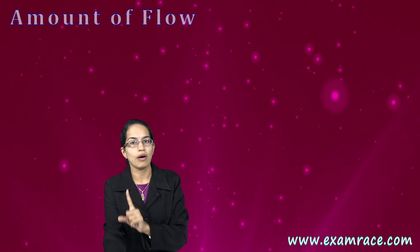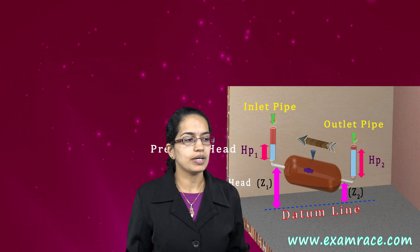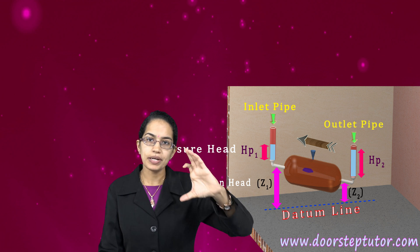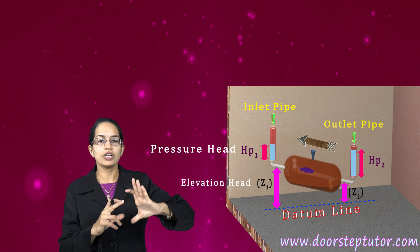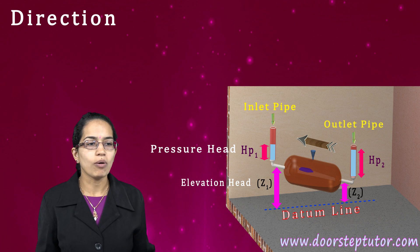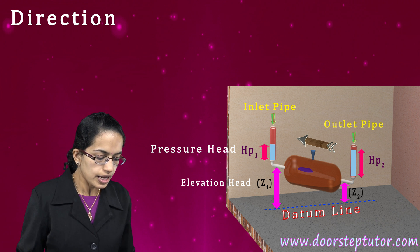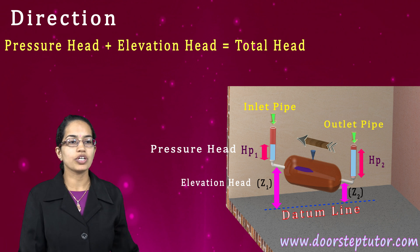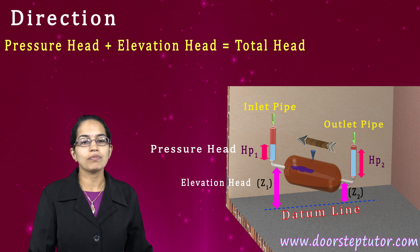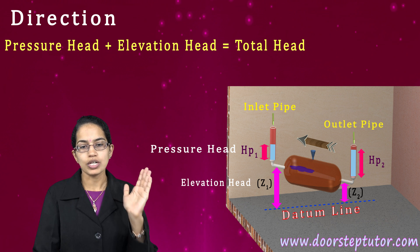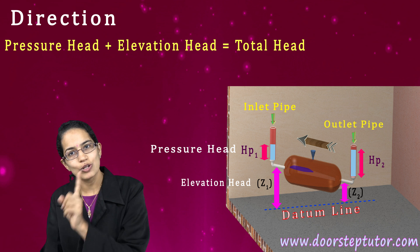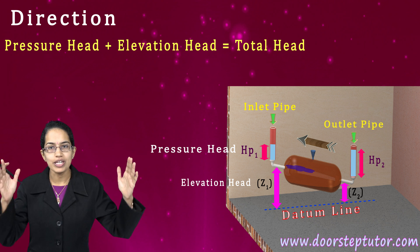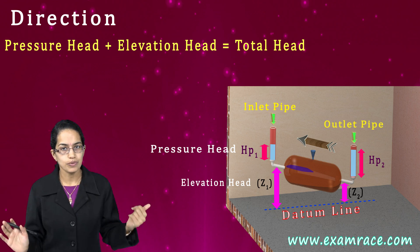The next important thing is the amount of flow. The most important point to remember is that the direction is determined by a combination of the pressure gradient and the elevation head together — giving the total head. Groundwater flows from a higher total head to a lower total head always.